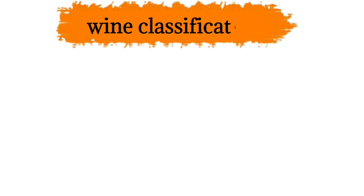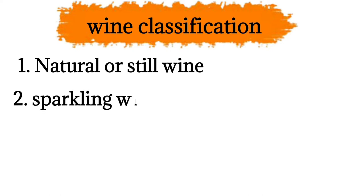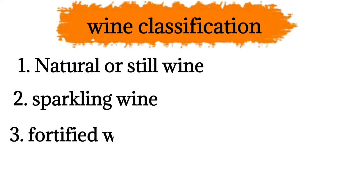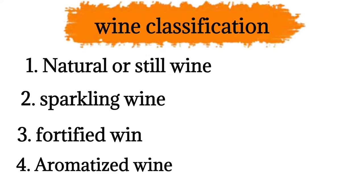Classification of wine: Wine is classified on the basis of the following factors. No. 1: Natural or still wine. No. 2: Sparkling wine. No. 3: Fortified wine. No. 4: Aromatized wine. Let's see more detail one by one.